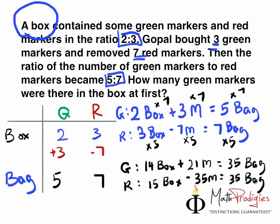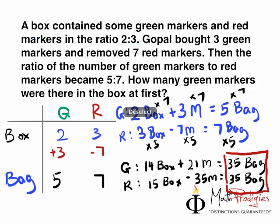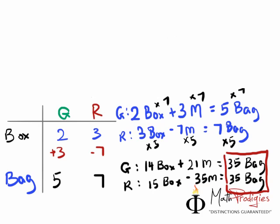Now what I want you to understand is we can actually put these two equations together since the right-hand side here, I'm going to highlight this to you, the right-hand side here are both the same. So what we can do is we can put them together. So the final equation, as you can see from this, what I'm going to write here is 14 box, just copy it, copy the green, 14 box plus 21 markers gives you what? I'm going to make it very clear for you. Equals, equals to the second equation, which is what? Yes, 15 boxes minus 35 markers.